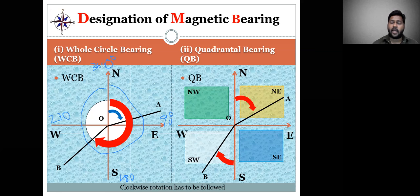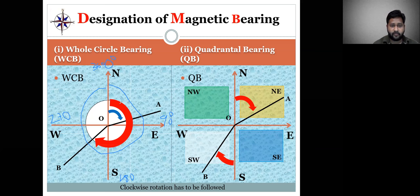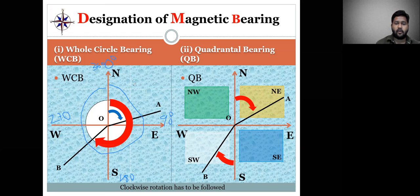As seen in the previous class, there is a prismatic compass and a surveyor compass. With the help of the prismatic compass only, we can conduct Whole-Circle Bearing measurements. The bearing system measured in this way is called OA, and this concludes the explanation of Whole-Circle Bearing.